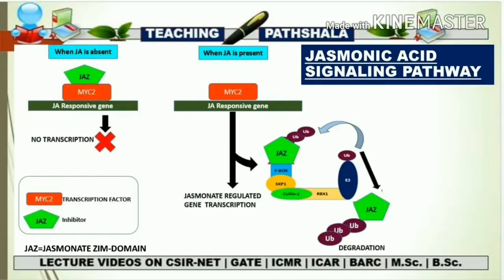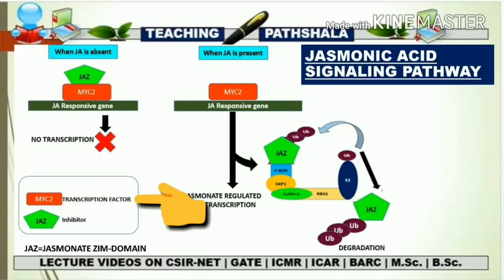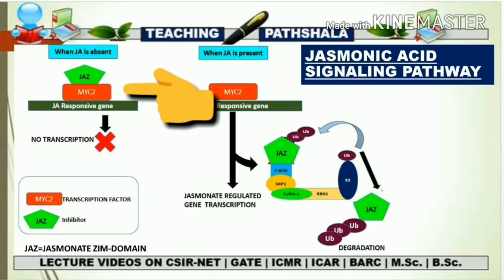Now let's study the Jasmonic Acid signaling pathway. First, we look at the pathway in the absence of Jasmonic Acid. There are two key factors: JAZ (Jasmonate ZIM domain), which acts as an inhibitor, and MYC2, a transcription factor responsible for transcription of JA-responsive genes. When there is no Jasmonic Acid, the JAZ inhibitor binds to MYC2 and inhibits transcription of JA-responsive genes, meaning there is no JA-mediated plant response.